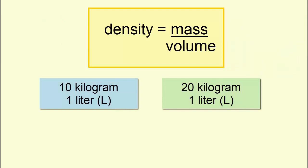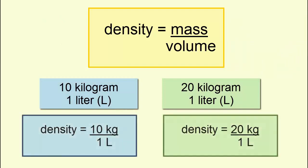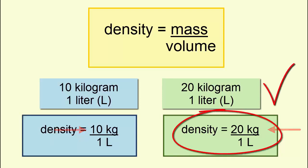Imagine two objects of the same volume but with different masses, same denominator, different numerators. Which object is denser? The object with the greater mass, numerator, is the denser one.